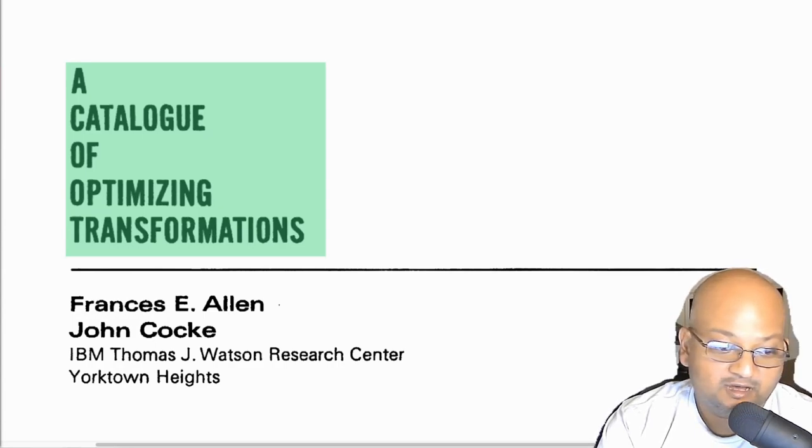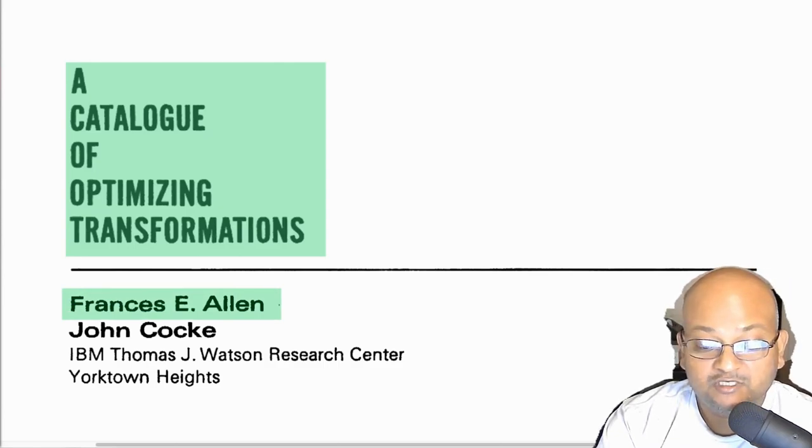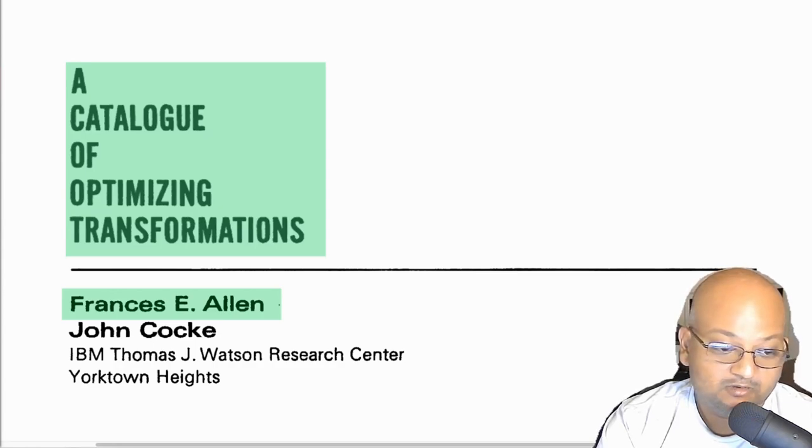This paper is absolutely foundational to the optimizations that compilers do. In fact, 80 to 90 percent of the optimizations that even a modern compiler does today are probably covered in this paper. The authors are Frances Allen, who unfortunately passed away just a few days before I'm recording this, who was the first female Turing Award winner. She won the award in 2006. Her co-author on this paper is John Cocke, who was another Turing Award winner and received it in 1987.